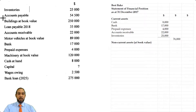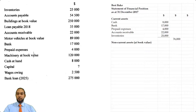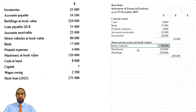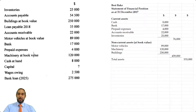We're going to take a subtotal for that section and then go to the non-current asset section. We have buildings at book value, motor vehicles at book value, as well as machinery at book value. So we're going to put in motor vehicles, then machinery, then buildings, and take a subtotal. I would say buildings is definitely the most permanent. So we have our two subtotals for our two types of assets, and we'll take a total for assets.